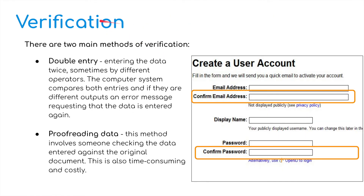Finally, we're going to look at verification. There are two main methods of verification. First, double entry: this is where data must be entered twice, sometimes by different operators. The computer system compares both entries, and if they're different, an error message requests that the data be entered again. For example, entering an email address and then confirming it, and a password and a confirmed password. Another example is CAPTCHA, where to verify you're not a robot you complete a puzzle, tick a box, or select pictures of trains or traffic lights. The second method is proofreading data: somebody actually checks the data entered against the original document by reading through it to make sure it's correct. This is very time-consuming and costly because it requires a person to do it.